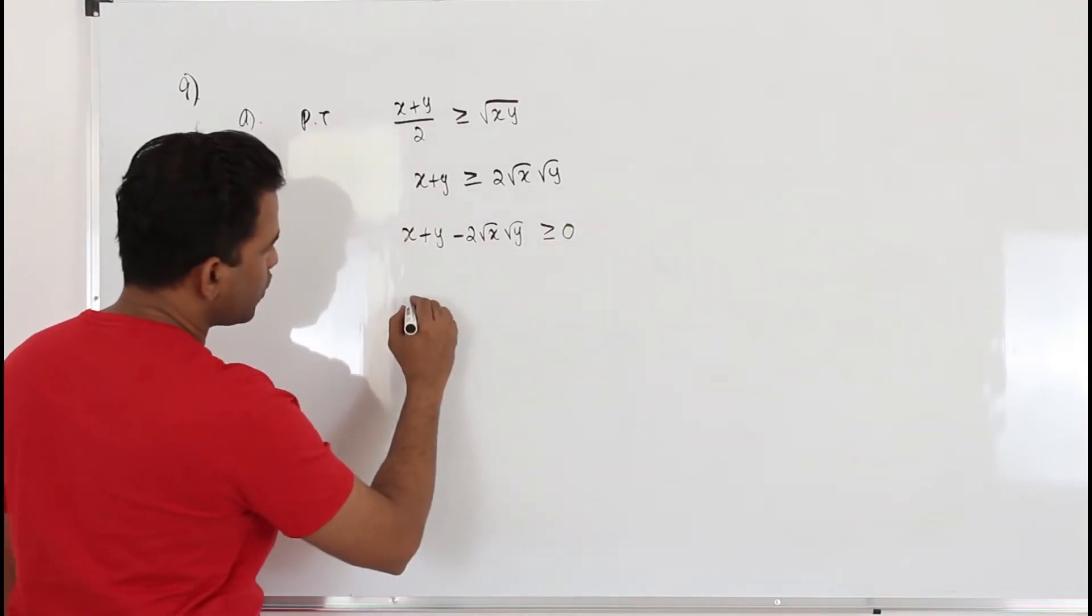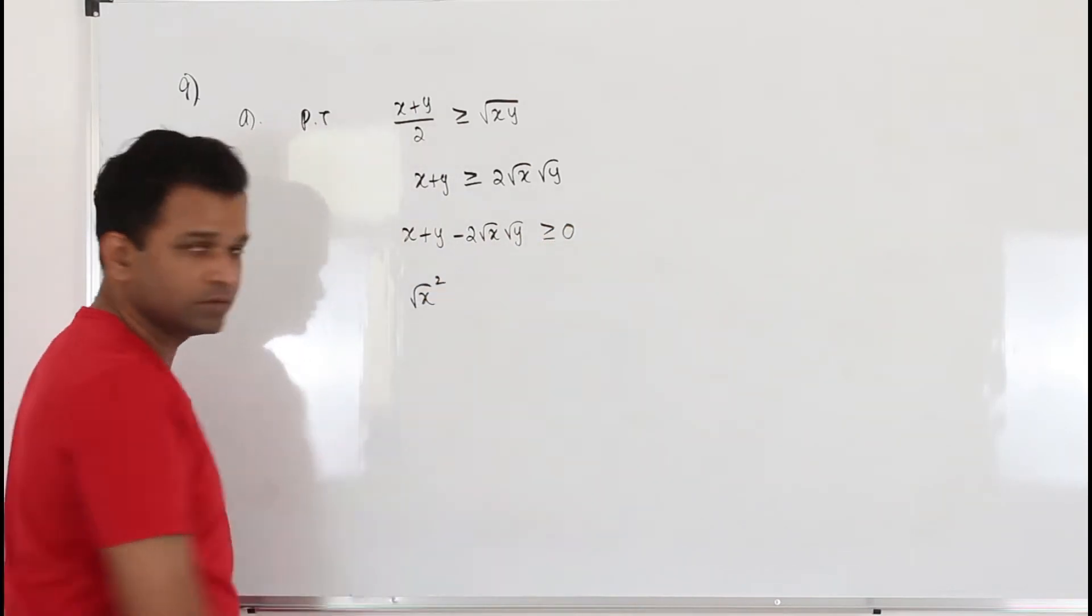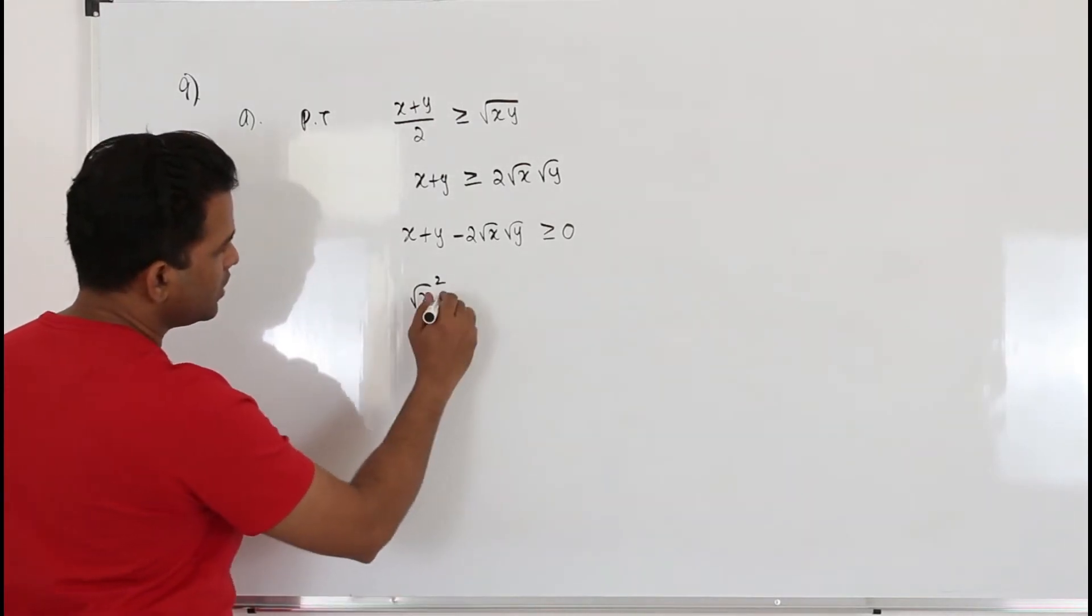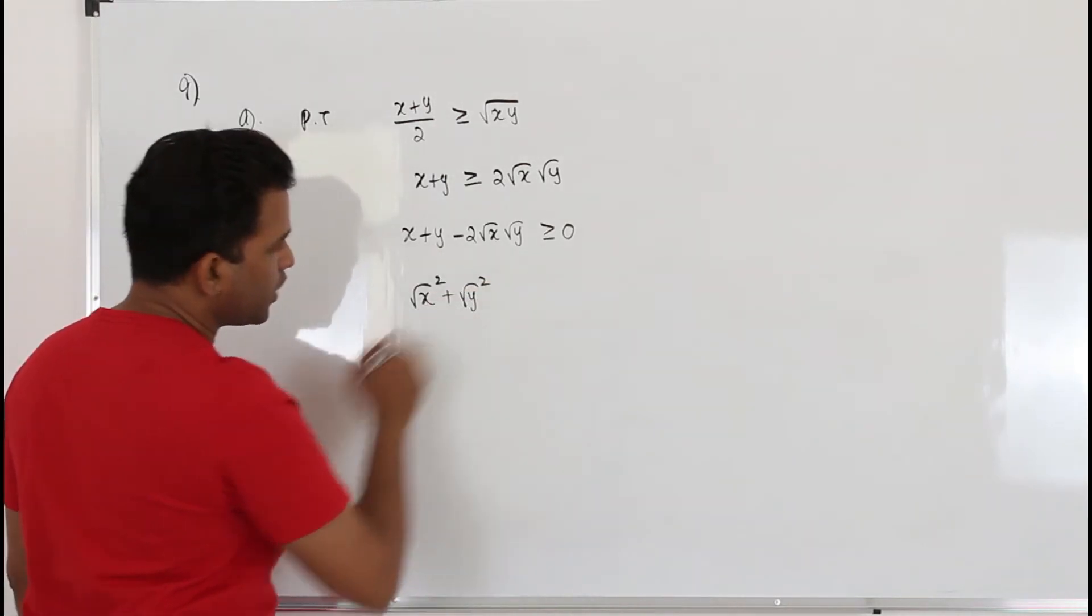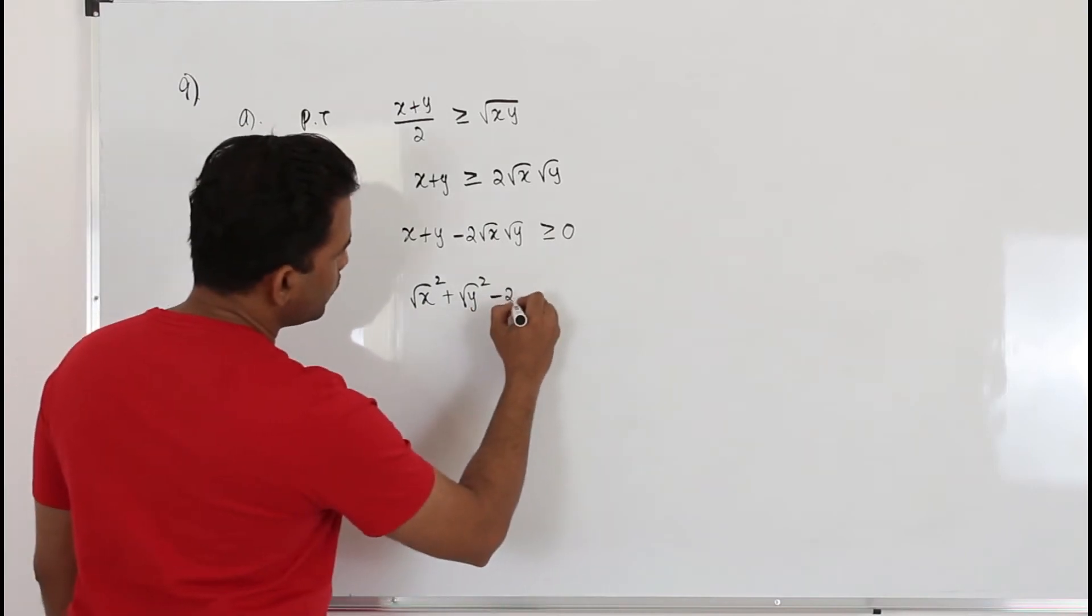You can write x as square root of x whole square, right? Which is x. I am going to write y as square root of y whole square. And I have this.